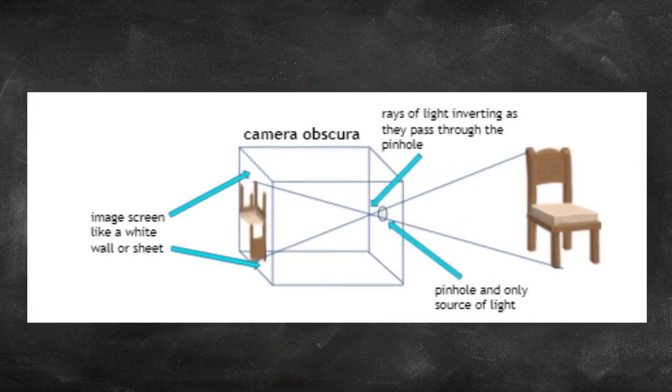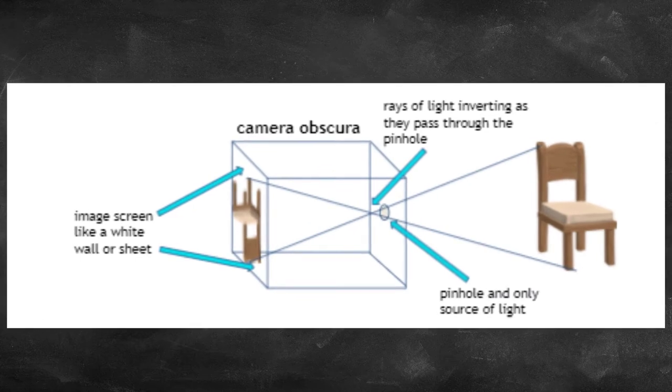You can see in the picture how the bottom of the chair reflects up on the light ray to the top of the image screen, while the top of the chair reflects down on a light ray to the bottom of the screen. Pretty cool that someone figured this out and created a Camera Obscura.